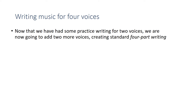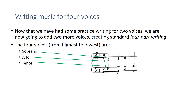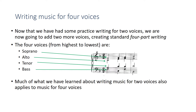In Species Counterpoint, you've had some practice writing for two voices. Now we're going to add two more voices, creating the standard four-part writing that is common in theory courses. Those four voices, from highest to lowest, are the soprano, the alto, the tenor, and the bass — SATB. A lot of the things we've learned about writing for two voices will also apply to writing for four voices.